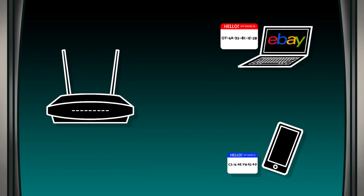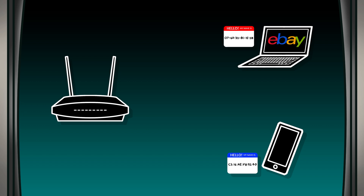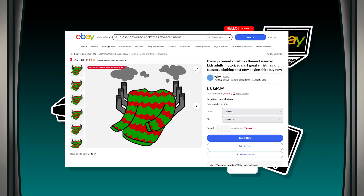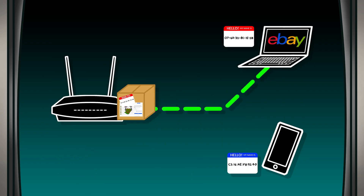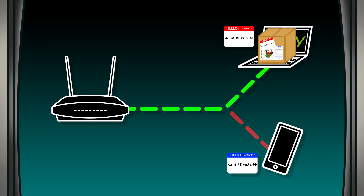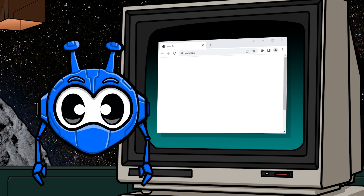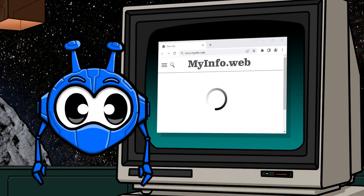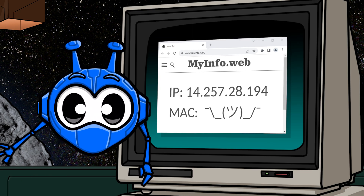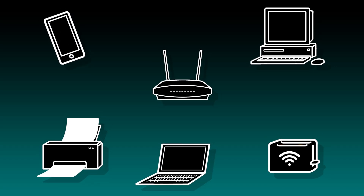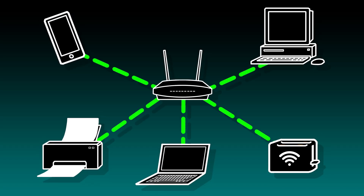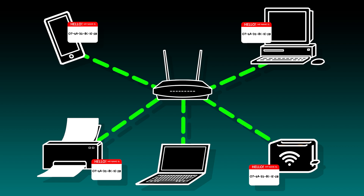That name tag is what lets the Wi-Fi router know that it's you who requested to see, oh, I don't know, an eBay listing for a diesel-powered Christmas sweater, and doesn't send that web page to your roommate's phone instead. Now, unlike the IP address you use, a Mac address cannot be seen by the websites you visit. Instead, a Mac address is exposed to the network that you're connected to, so it can be seen by the router and other devices on the same network.